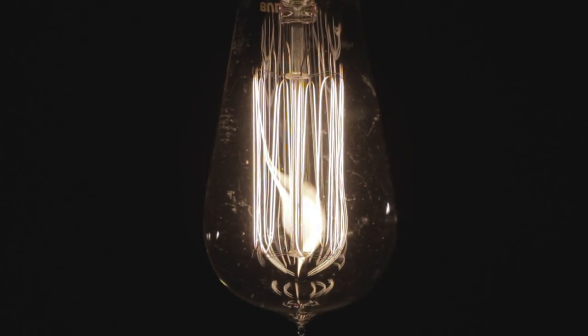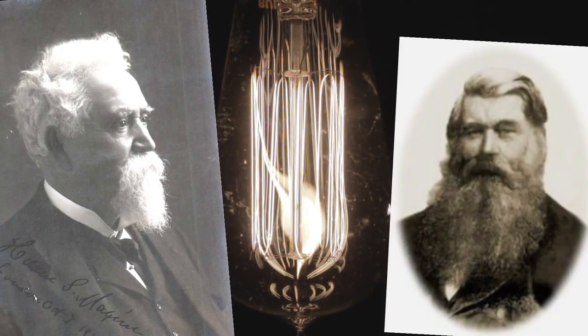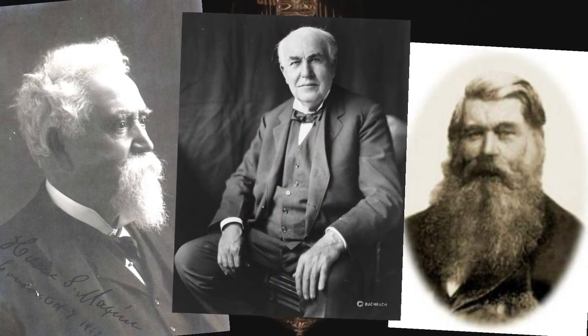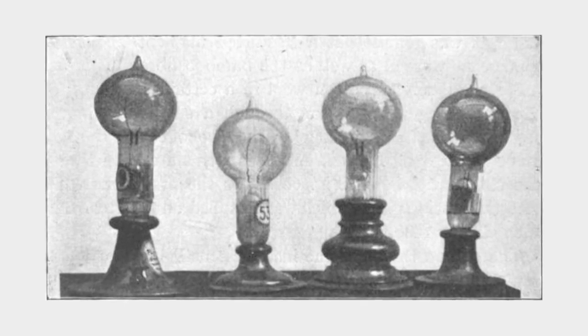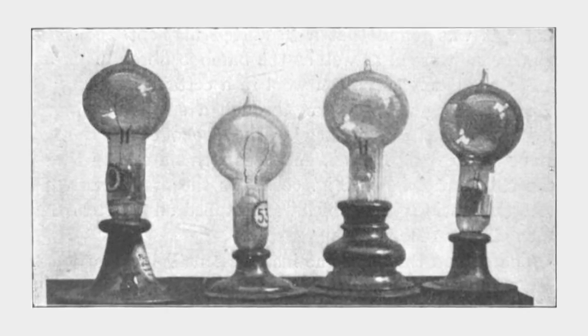The development of the incandescent light bulb took many years and relied on the talents of many inventors from around the world. One of the key changes was the use of an inert gas, rather than a vacuum, in the bulb itself.